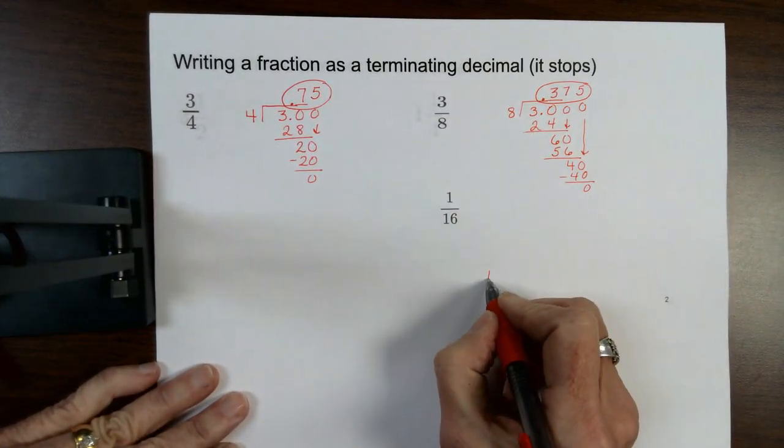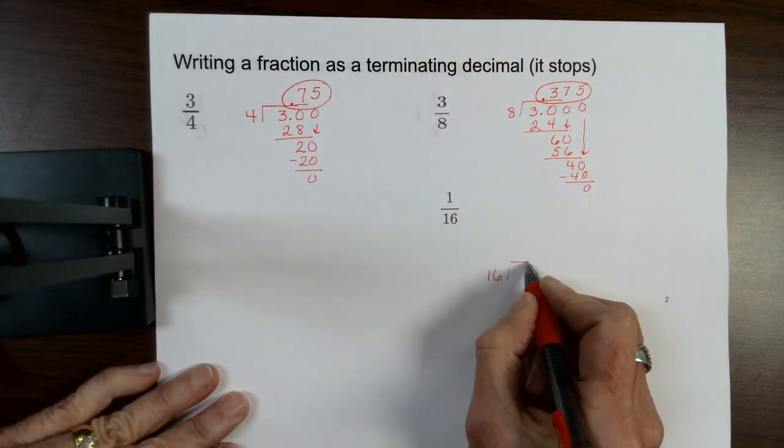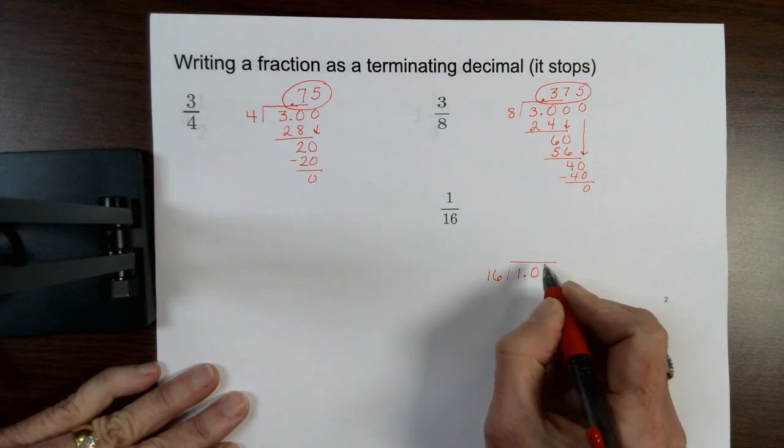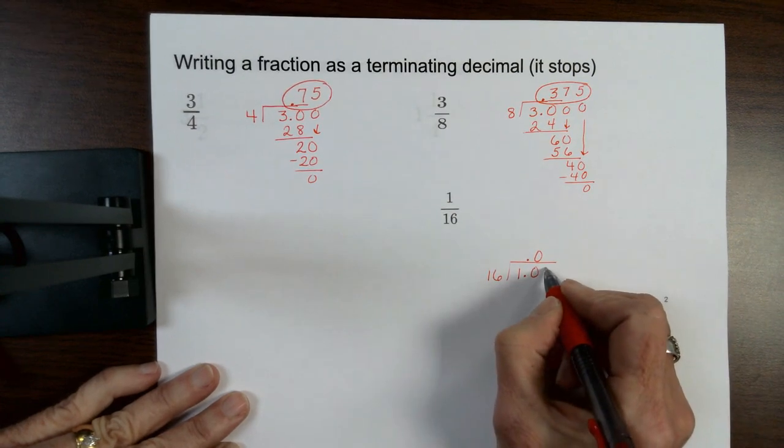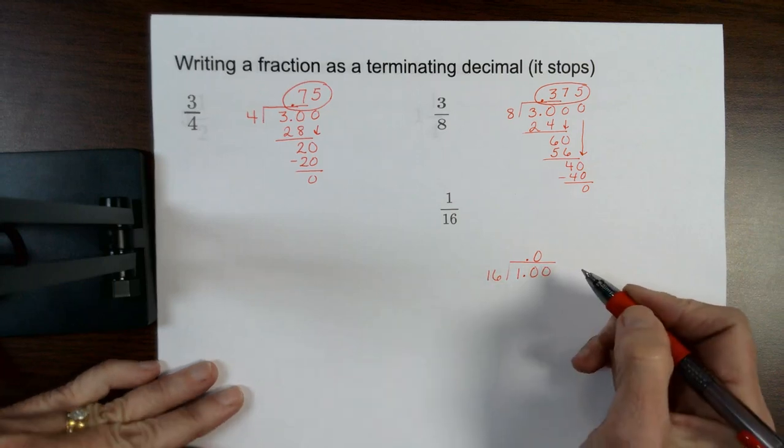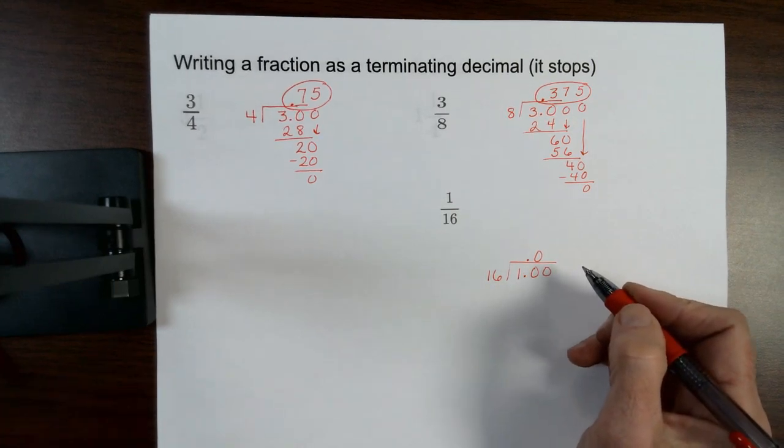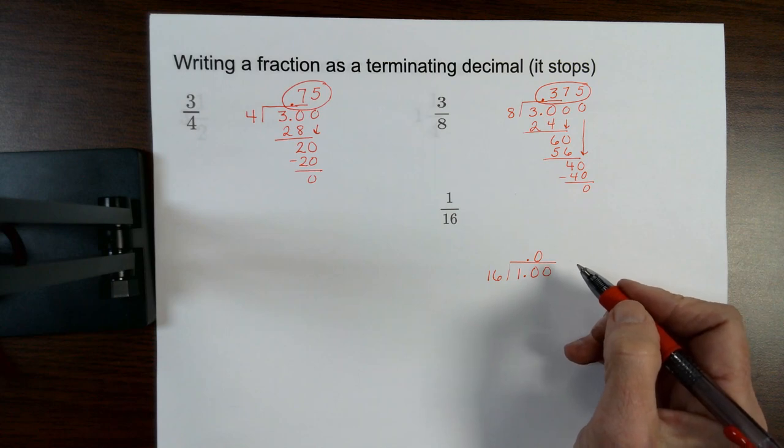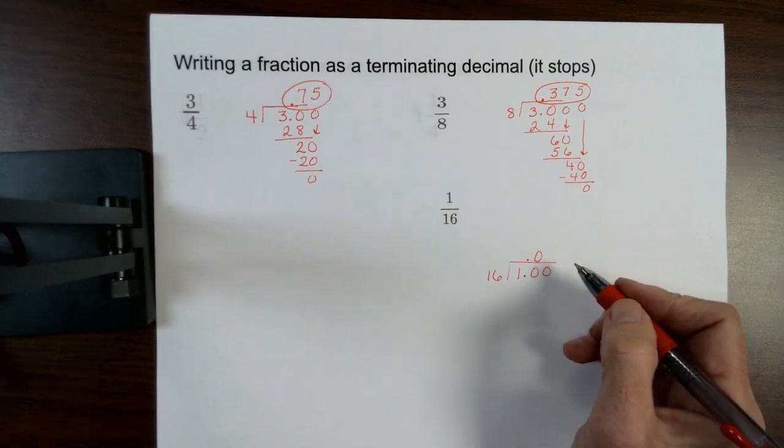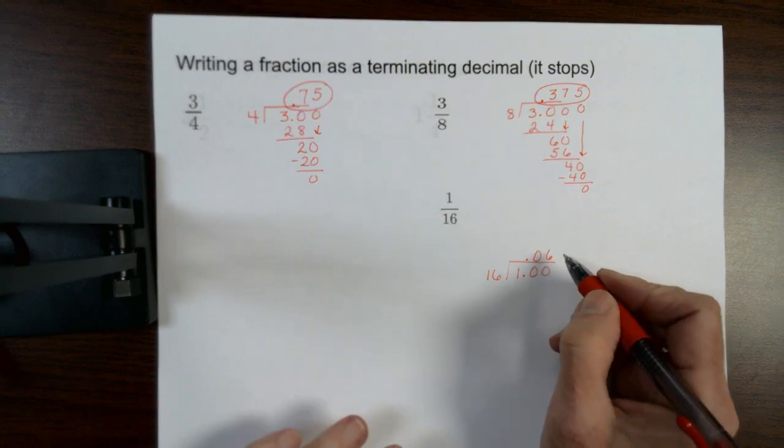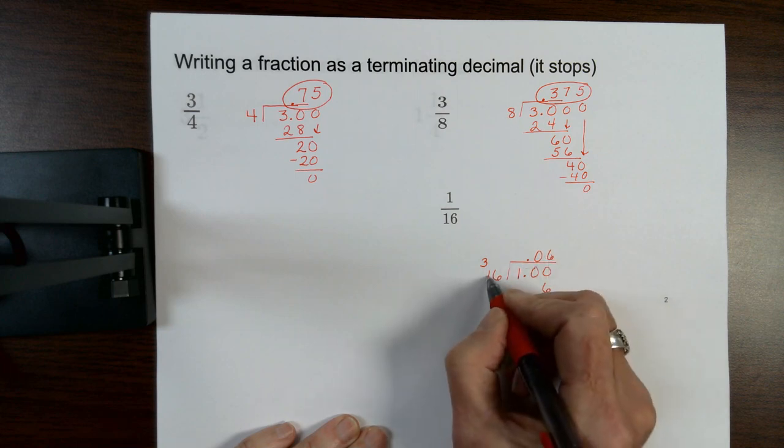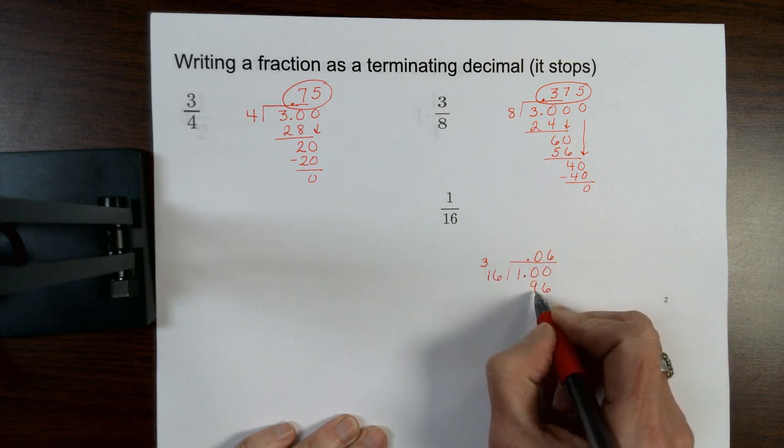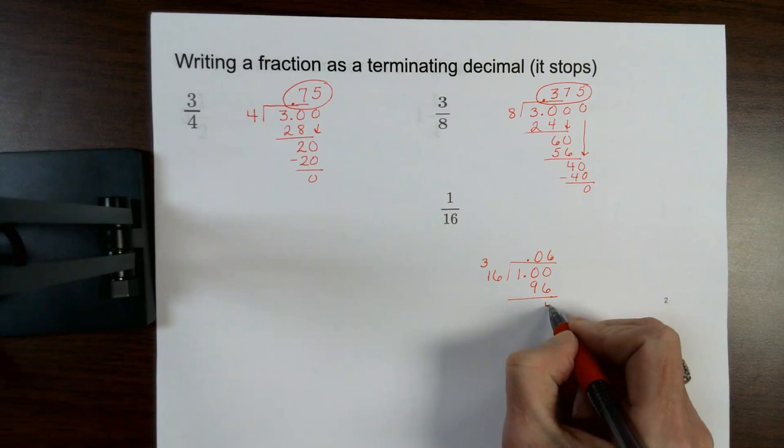Let's do 1 sixteenth. I'm going to divide 16 into 1. I'm going to add a decimal and a 0. 16 goes into 10, 0 times. So I have to put that 0 up there. So then I'll add another 0. 16 goes into 100. I am betting, let's say, 6 times is what I'm going to guess. So 36. Carry my 3. 6 times 1 is 6 plus 3 more is 9.